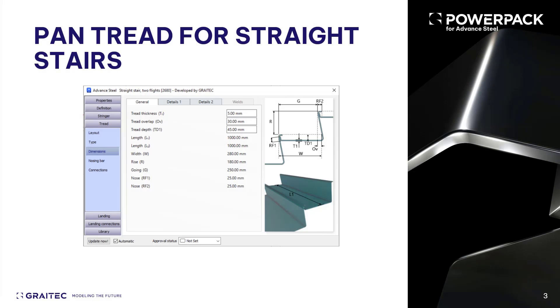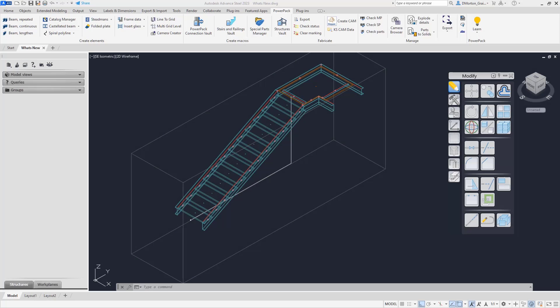The pan tread option has been added and has many options available to help in the creation of this tread type. Features such as the ability to control the interlock at the nosing, indent for concrete retainment, and vertical nose face have also been added. Here we have some tools that have been added as pan treads for straight stairs.